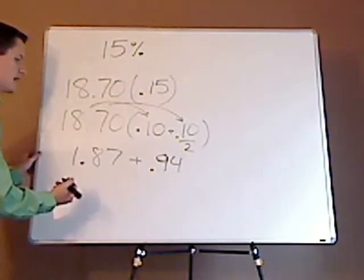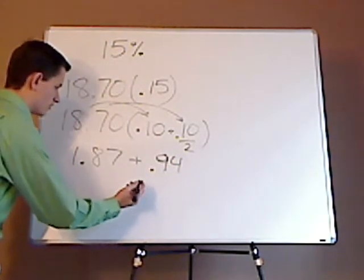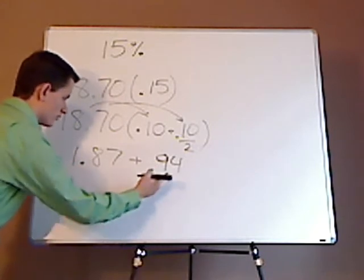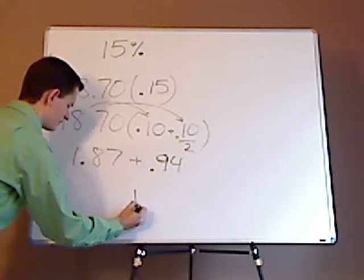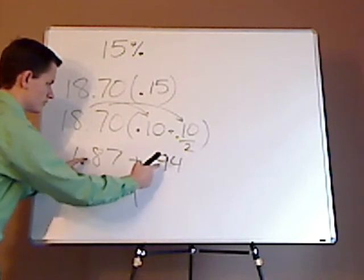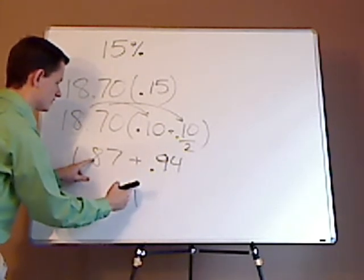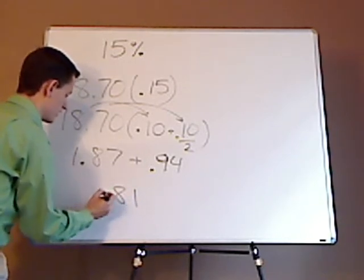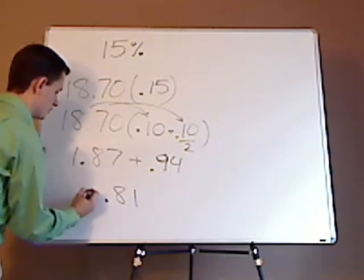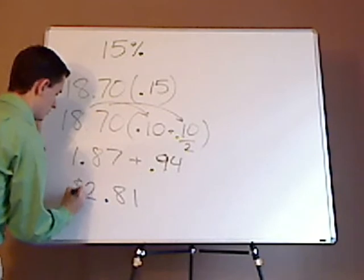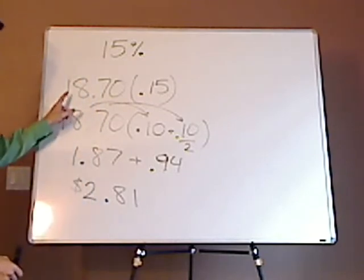And then you just simply add those together and start left to right. So 4 plus 7 is 11, carry the 1. So you have 9 plus 1 is 10, plus 8 is 18, carry the 1 again, and 1 plus 1 is 2. So the tip would be this right here.